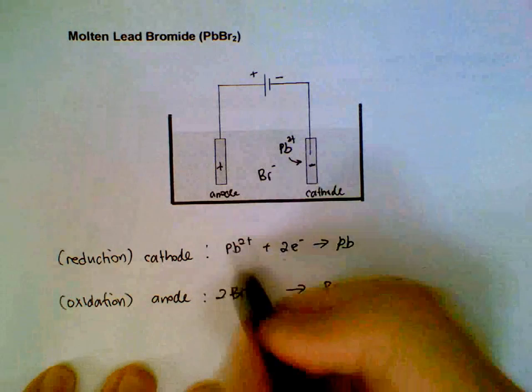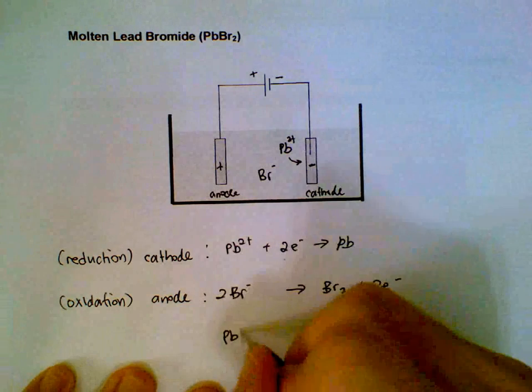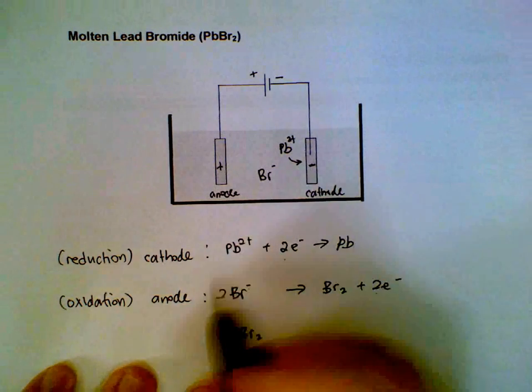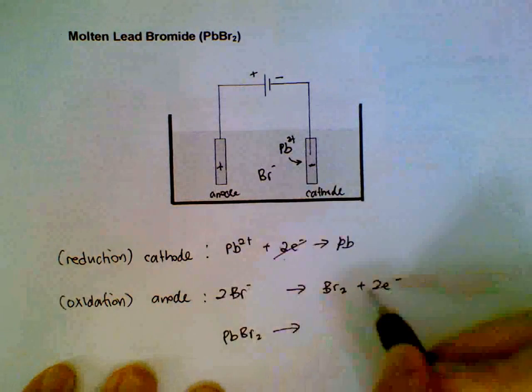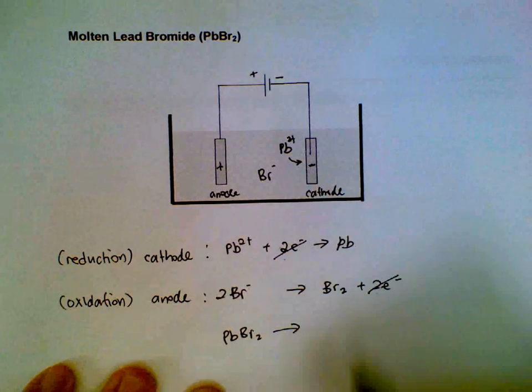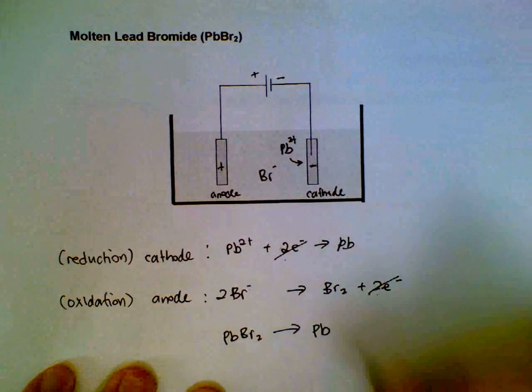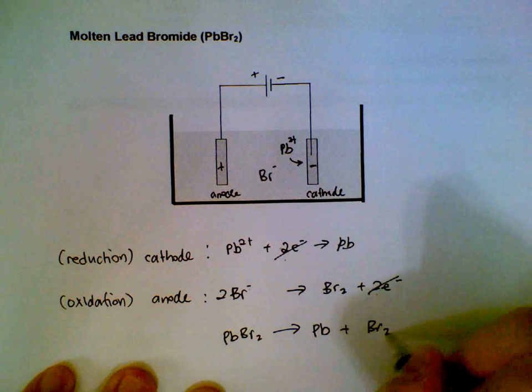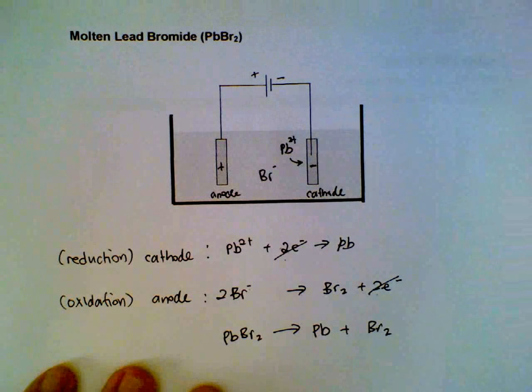So we have PbBr2, electrons cancel out, we will have one mole of lead with every one mole of bromine element formed.